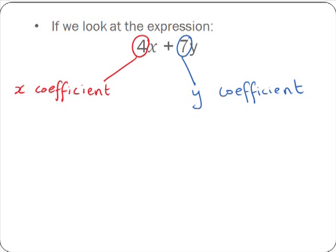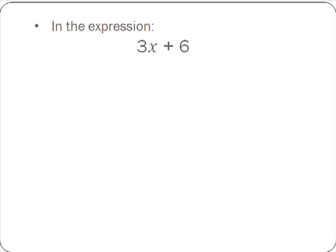Finally, in the expression 3x plus 6, the 6 is known as the constant because it is not multiplied by any variable. By variable, we mean x or y or a or b.